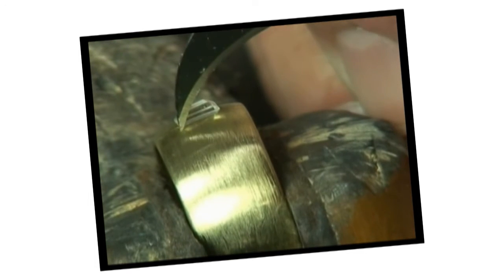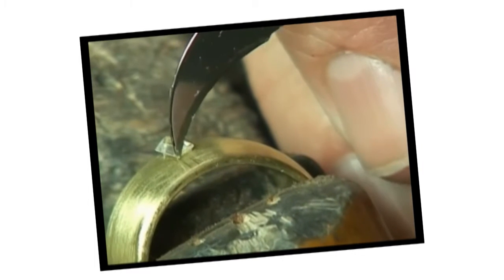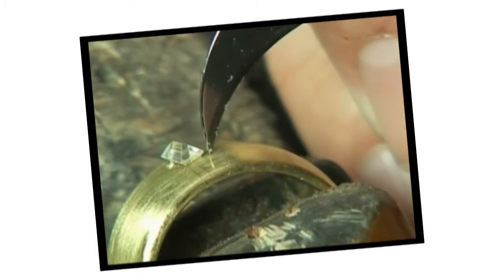So instead of a scribe, we use an exacto knife. Hold the blade at a 90-degree angle to the ring and we can scribe a line precisely the size of the diamond.